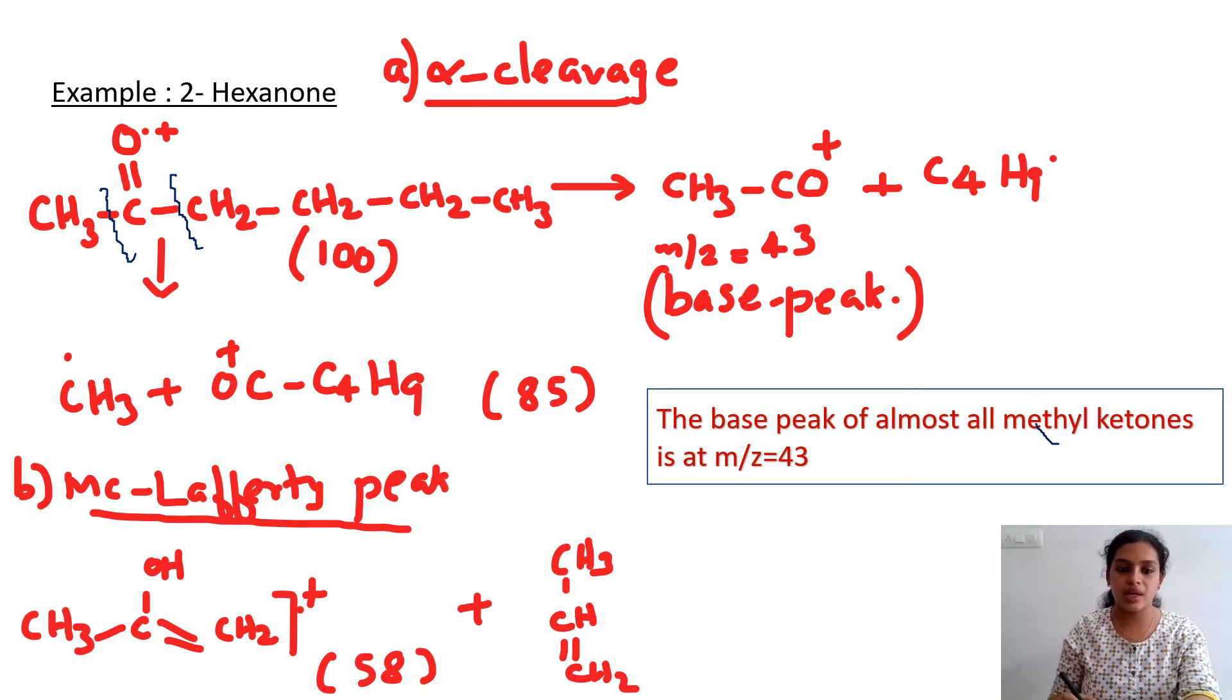The McLafferty peak is at m/z equal to 58, and propene is the byproduct for McLafferty rearrangement. The point to be noted is that the base peak of almost all methyl ketones is at m/z equal to 43. 2-hexanone is a methyl ketone, so the base peak of almost all methyl ketones will be at 43.